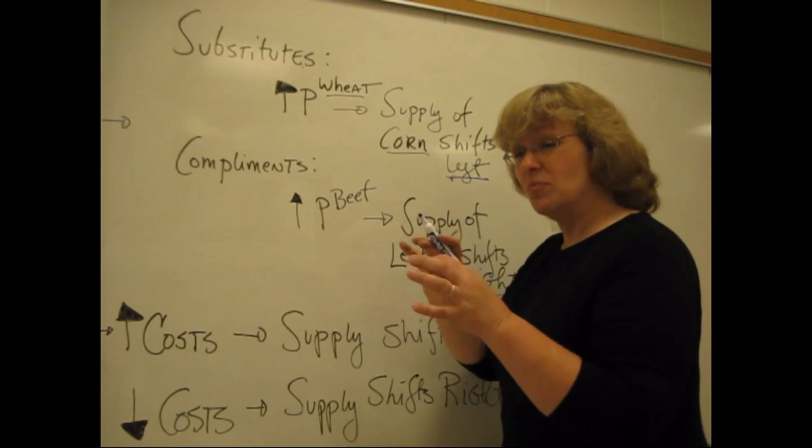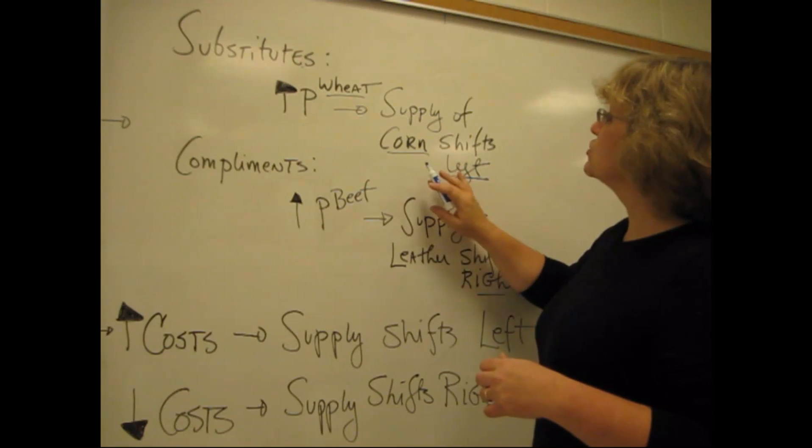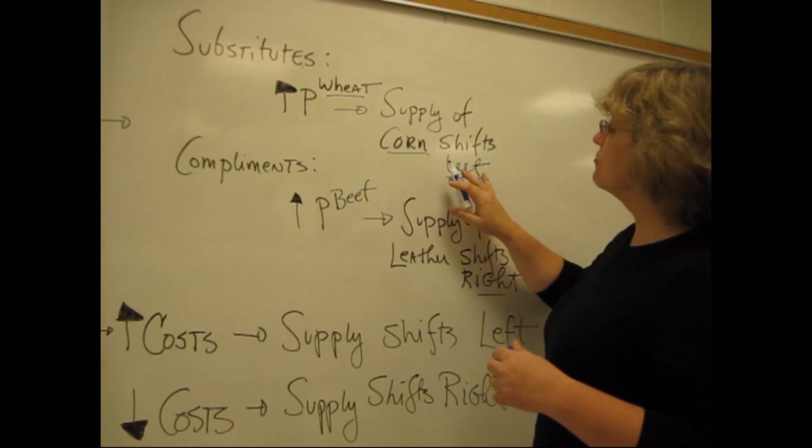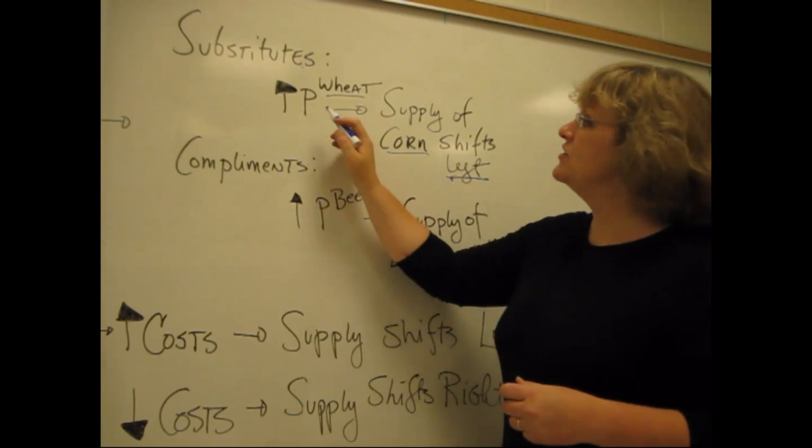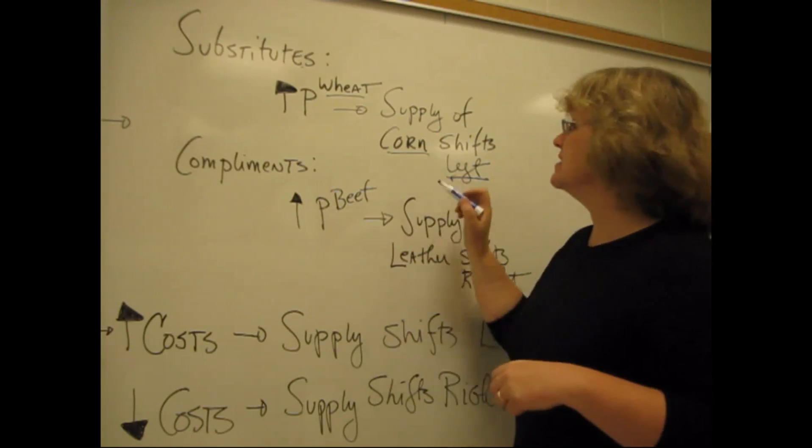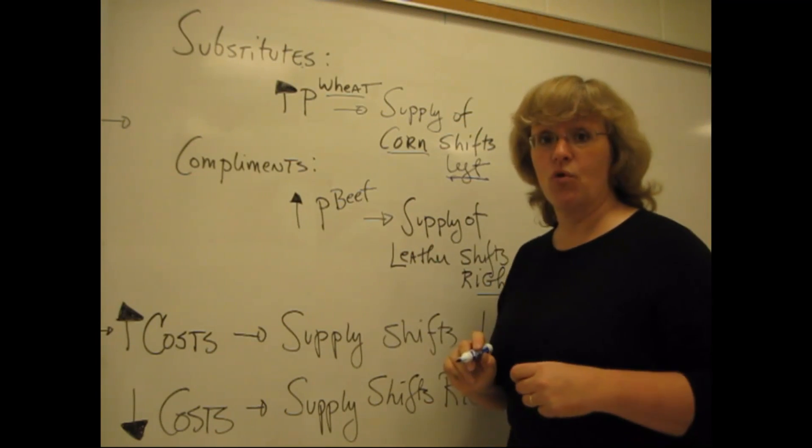Wheat's a better deal to produce right now and sell. So instead of producing quite so much corn, the farmer is going to switch or substitute away from producing corn and produce a little bit more wheat instead. That change in the price of wheat causes that shift in the supply of corn to the left.